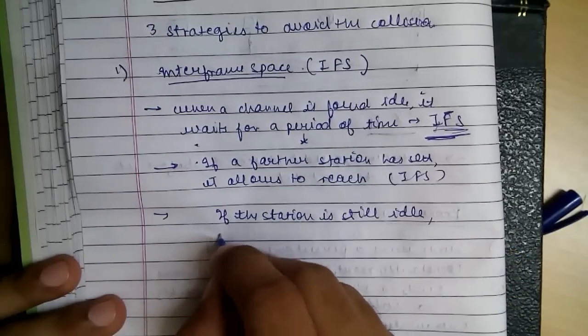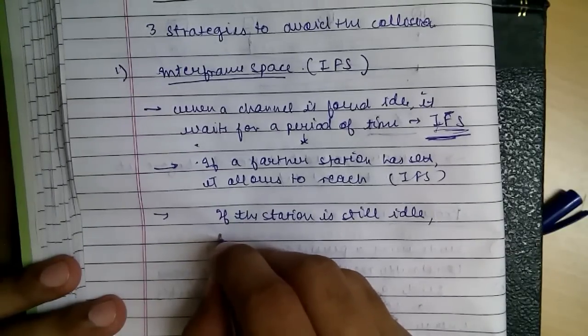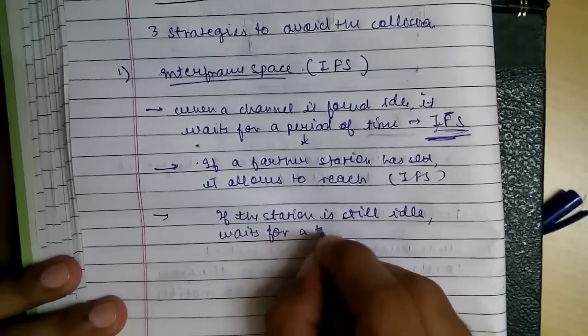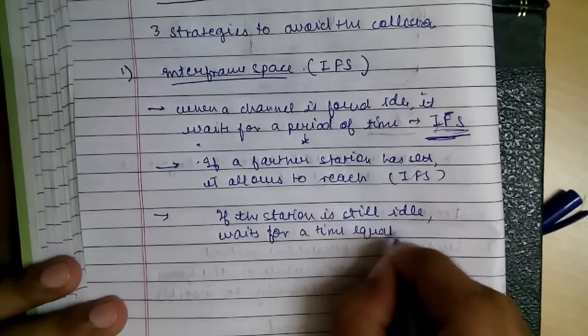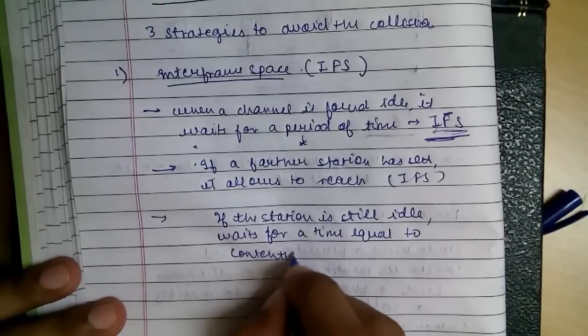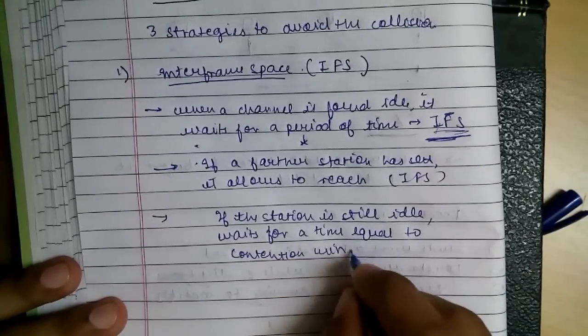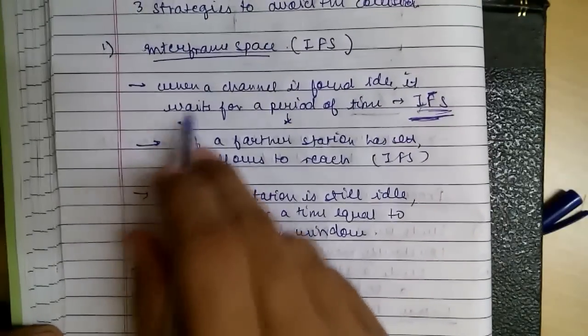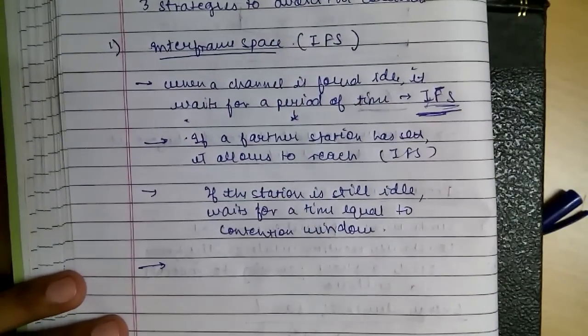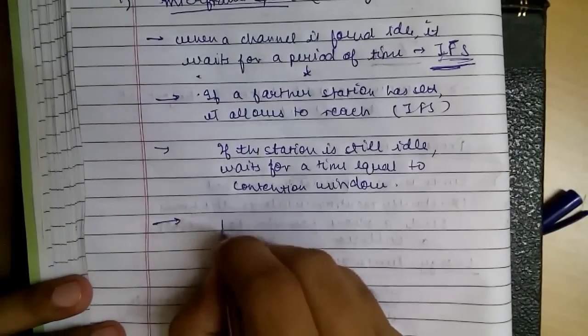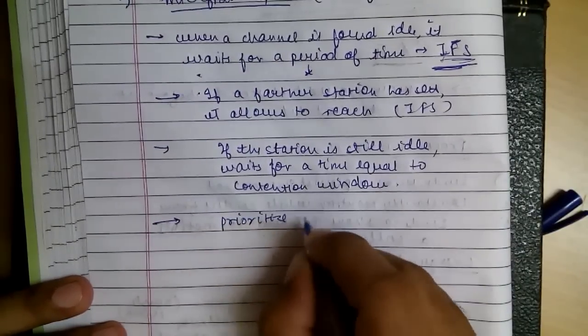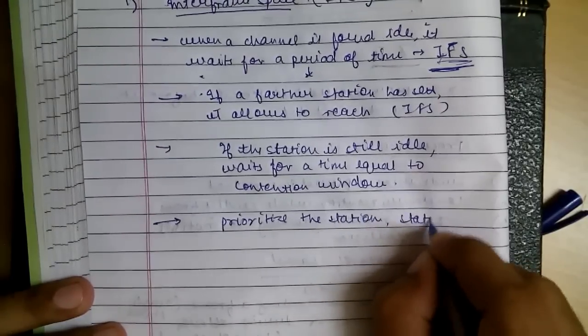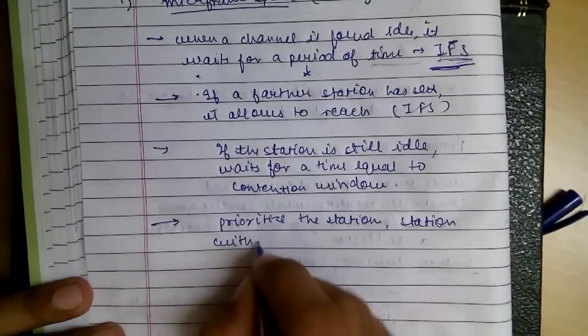Waits for a time equal to contention window. So this method, as well as preventing collision, also helps in prioritizing the station. The station with smaller IFS has higher priority.